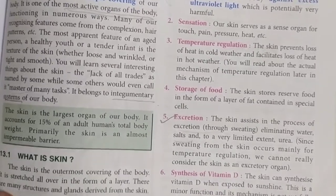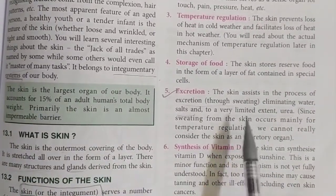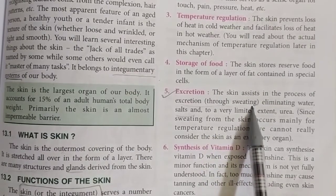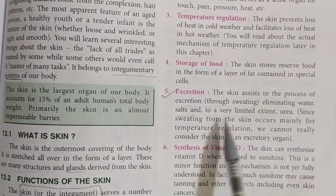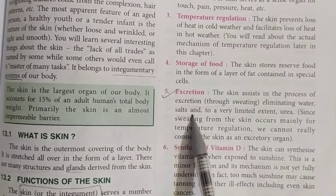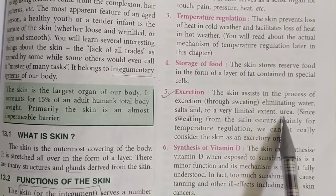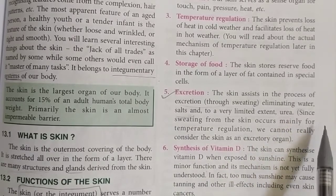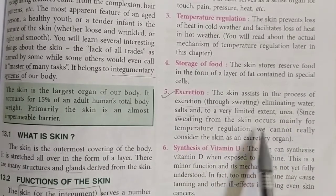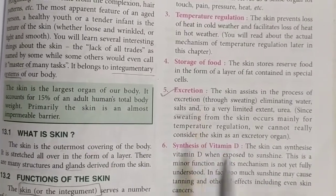Excretion means elimination of wastes, and it occurs through sweating. Sweat is actually a combination of water and salts that are not required by the body, along with some urea. Since sweating occurs through the skin, it also helps in temperature regulation.